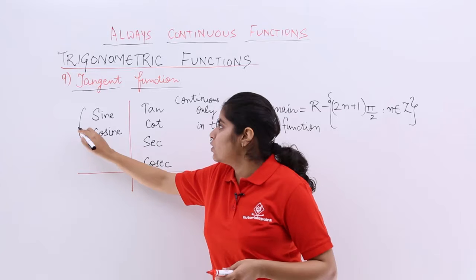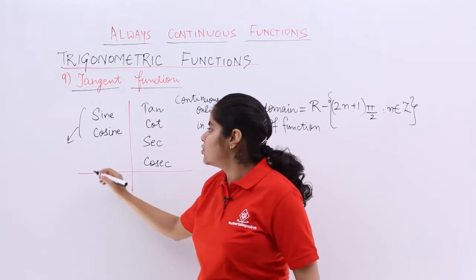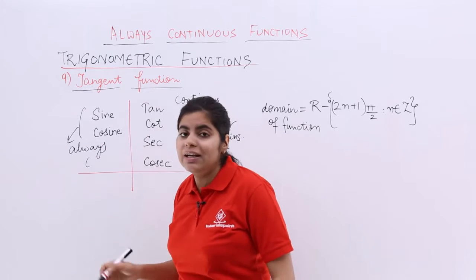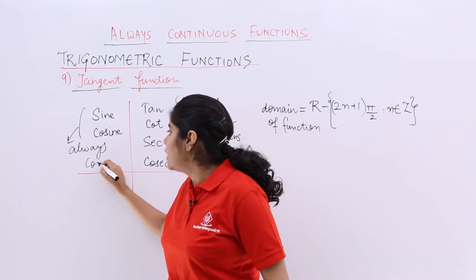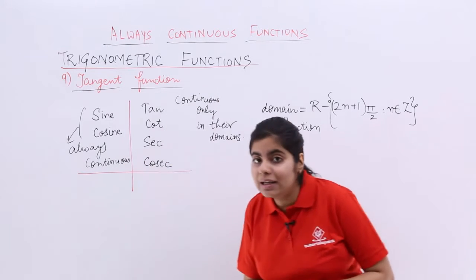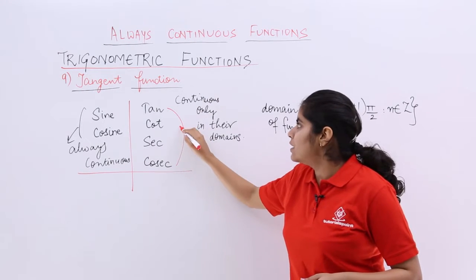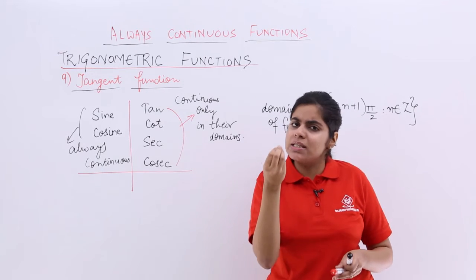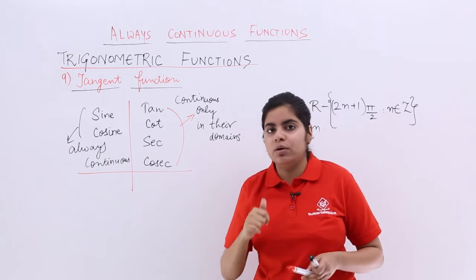Sine and cosine are the functions which are always continuous. Everywhere continuous, even if in domain, even if not in domain, they are always continuous. But these four, tan, cot, sec, cosec are the functions which are continuous only in their domains because somewhere or the other time, they become not defined.